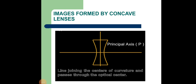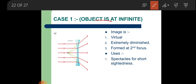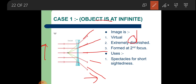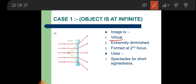Before going to the simple microscope, we will discuss images formed by concave lenses. There are basically two cases. First case: object at infinity. Rays come parallel to the principal axis. After refraction they are scattered — they cannot meet on this side of the lens. To an observer standing here, these rays seem to meet at the focus point of the concave lens. Properties: virtual, extremely diminished, formed at the second focus. Uses: spectacles.